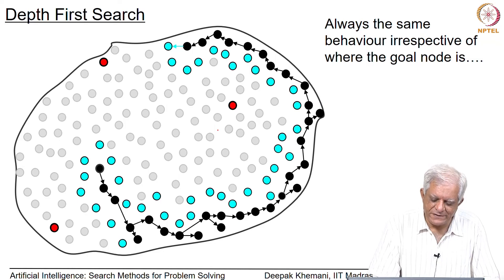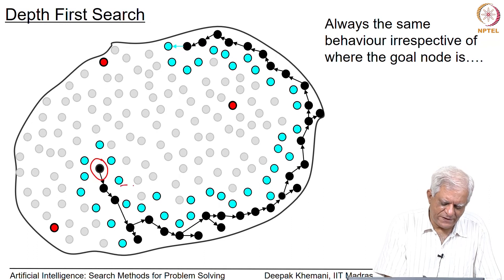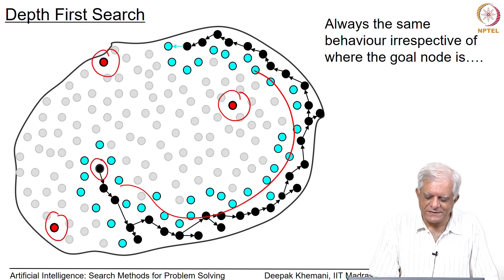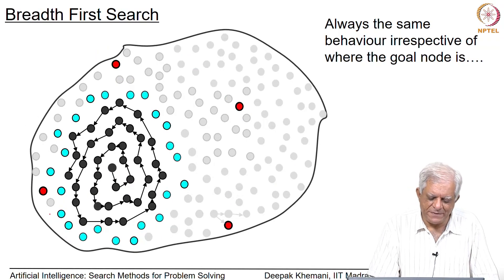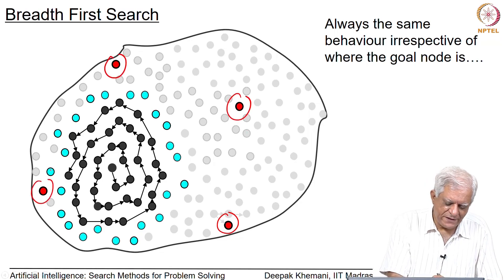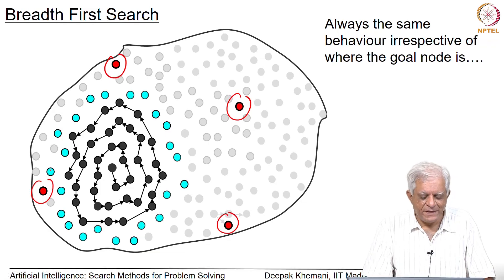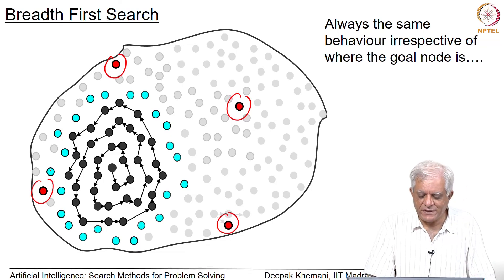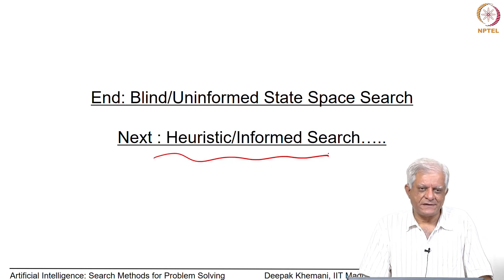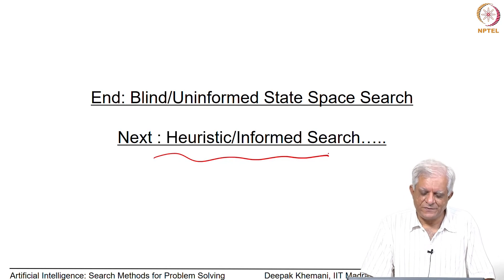We will leave with the observation that the depth first search algorithm always behaves in the same manner, irrespective of whether the goal was here or here or here — in that sense it is a blind search algorithm. The same is the case with breadth first search; irrespective of where the goal is, it just manually goes around doing what it does without even being aware of where the goal node is. The next stage we will look at is called heuristic search, and that is what we will do in the next class.